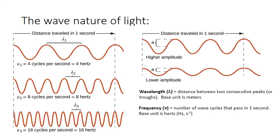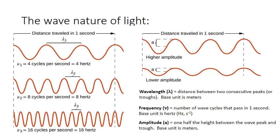Since cycles is a count and doesn't carry a unit, the actual unit associated with hertz is seconds to the negative one, or one over seconds. Finally, we can characterize waves in terms of amplitude, abbreviated with a lowercase a. Amplitude is simply one half the height between the wave peak and the wave trough. Amplitude is related to the intensity of the wave, and for light waves, the higher the amplitude, the brighter the light.